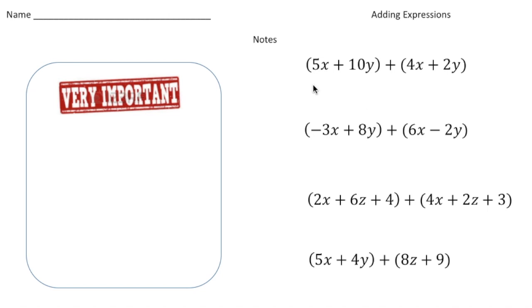The first expression we have is 5x plus 10y plus 4x plus 2y. The key thing to remember about adding expressions is that you have to combine like terms. Let's put that inside this box here. So you always have to combine like terms.